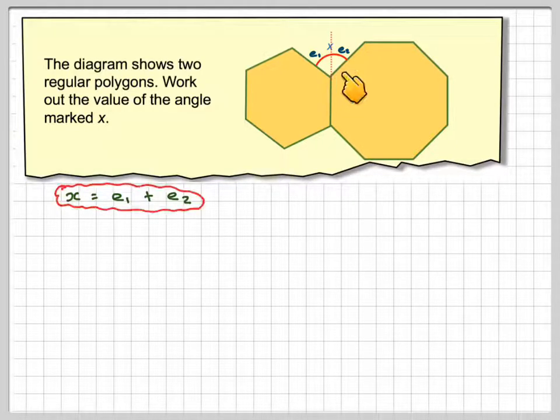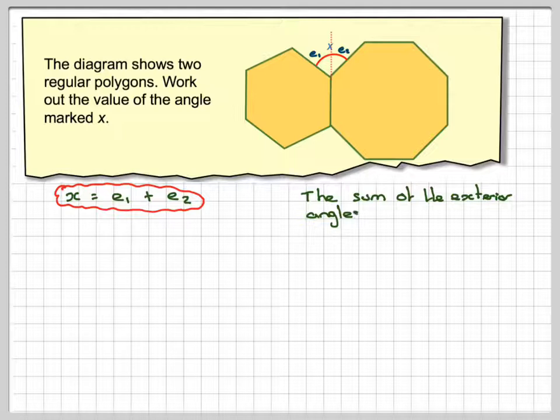If we find E1 and E2 and add them together, that will give me the value of X. The sum of the exterior angles of any polygon is 360.